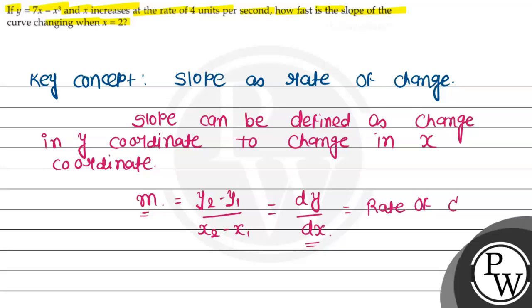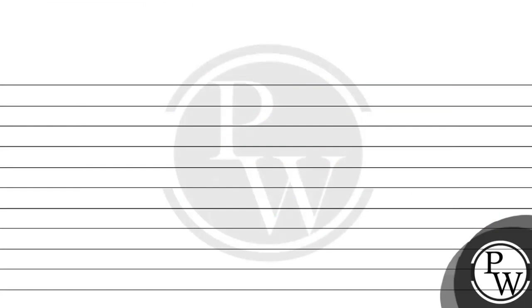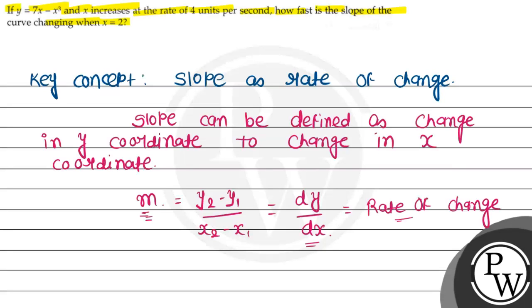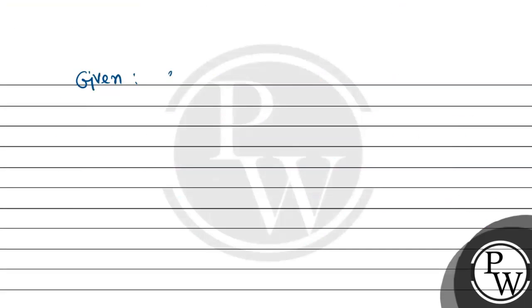So, but indirectly, slope relates to rate of change. Now, consider the given function, that given function, y is equal to 7x minus x cube.